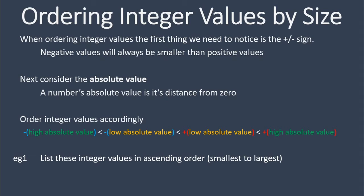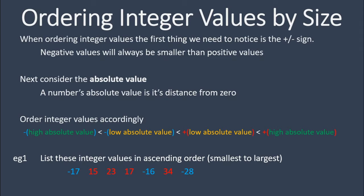Let's try an example. List these integer values in ascending order. Ascending order means getting bigger from smallest to largest — you're going to want to write that down. So looking at these integer values, we're first going to look at which ones are positive and which ones are negative. Starting with the smallest ones, we're definitely starting with the negatives: negative 17, negative 16, and negative 28. Which one is the smallest — the furthest from 0 in the negative direction? That's negative 28. Then comes negative 17. Then comes negative 16, going from smallest to biggest. Negative 28 is less than negative 17, which is less than negative 16.